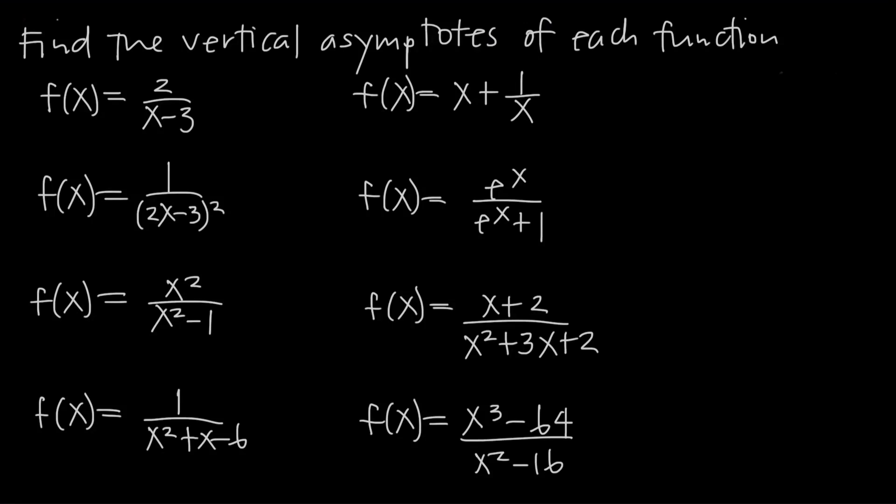In this video, we're going to be talking about how to find the vertical asymptotes of a rational function. Keep in mind that you're only really going to have vertical asymptotes in rational functions, or sometimes in logarithmic functions, but the vast majority of the time you're going to be dealing with rational functions. Remember that a rational function is just a fraction. So here we have a lot of examples of fractions, and we want to talk about how to find the vertical asymptotes of fractions like these ones.